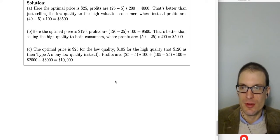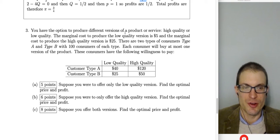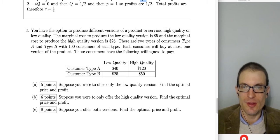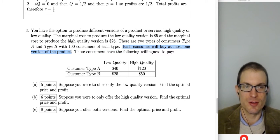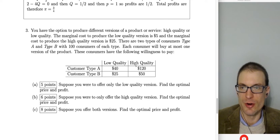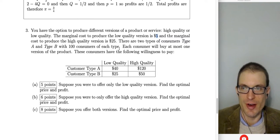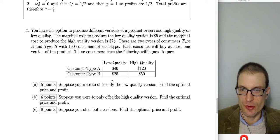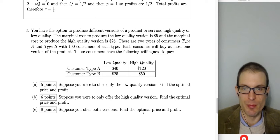The last question is a second-degree price discrimination problem — not bundling, because we have two different versions of a product (high quality and low quality) and each consumer buys at most one version. Marginal cost of low quality is $5; high quality is $25. There are two types of consumers, 100 of each, with different willingness to pay. Find the optimal price and profit for offering only low quality, only high quality, and both versions.